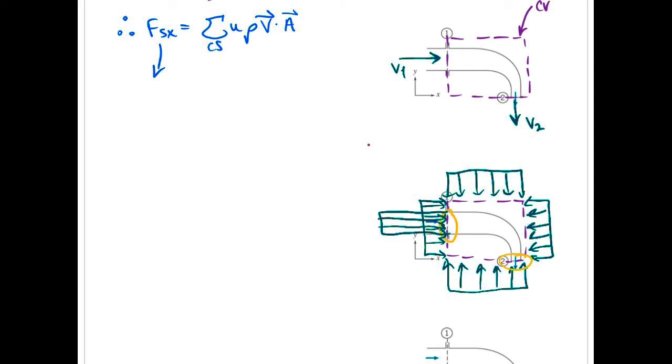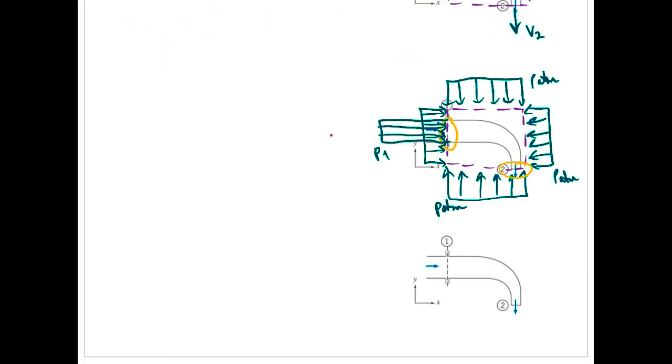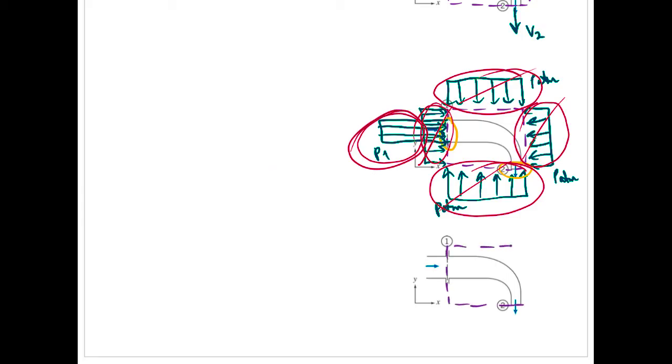Okay a lot of these cancel off so let's just redraw this in its most simple form. So top and bottom they cancel exactly. Left and right as well except not everything we're still left with the p1 acting on this surface here. So we'll redraw this now. Now only this guy's left.